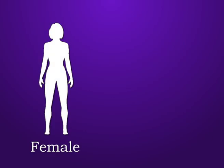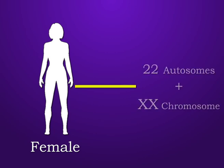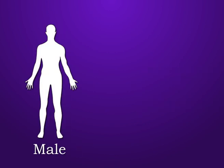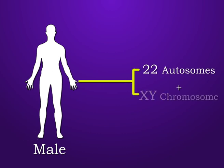In a female, only one type of sex chromosomes are there, which is the X chromosome. But in a male, both X and Y sex chromosomes are present.